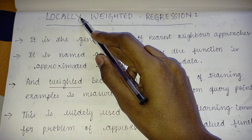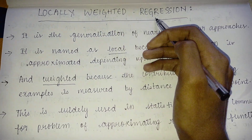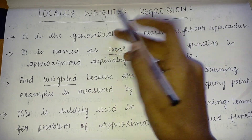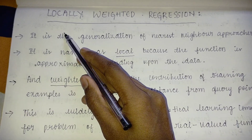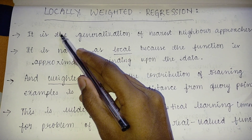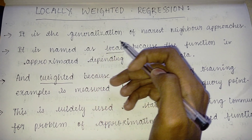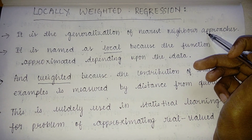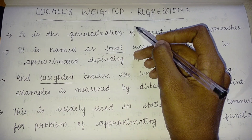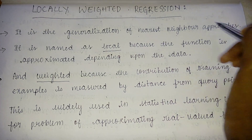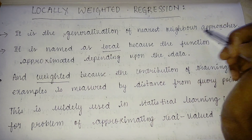We'll see what is locally weighted regression. Locally weighted regression is the generalization of nearest neighbor approaches, so KNN is the nearest neighbor approach, and this is the generalization of that nearest neighbor approach.